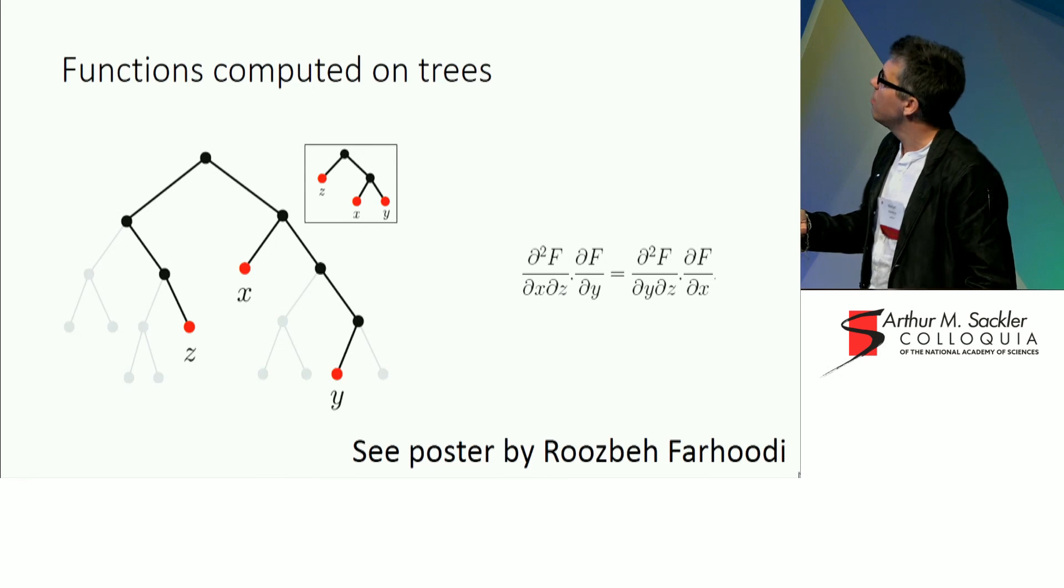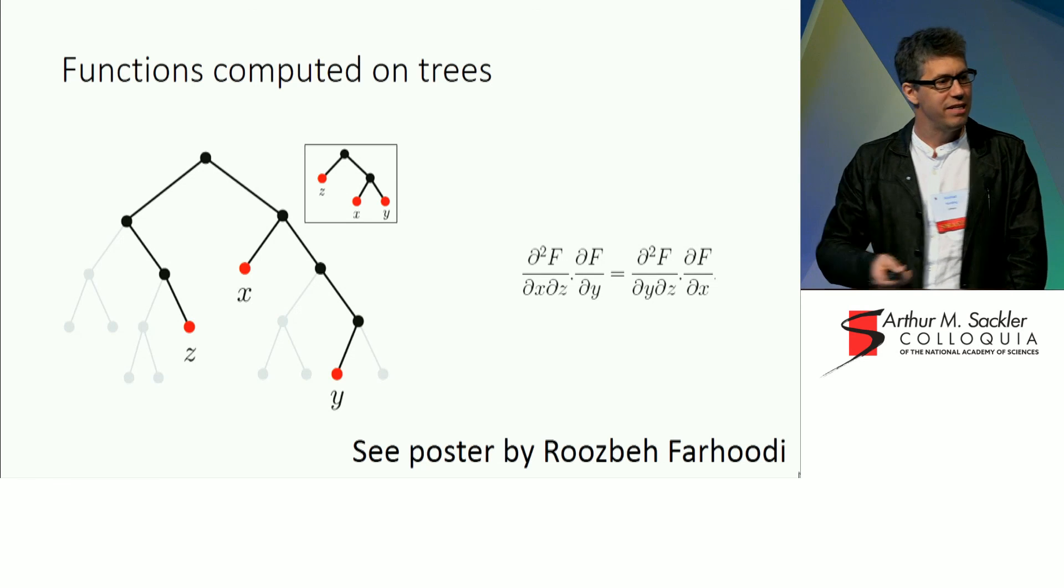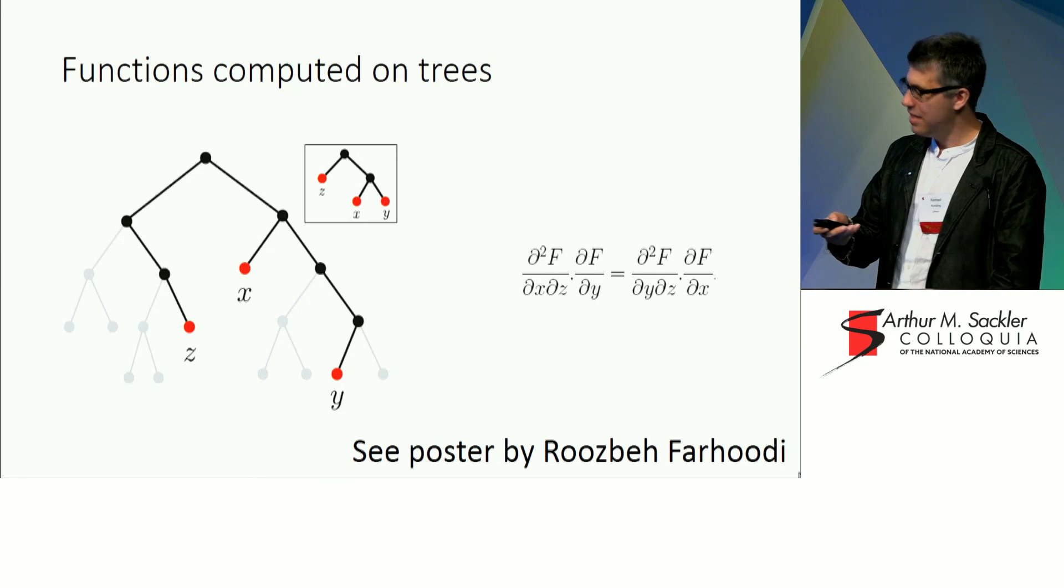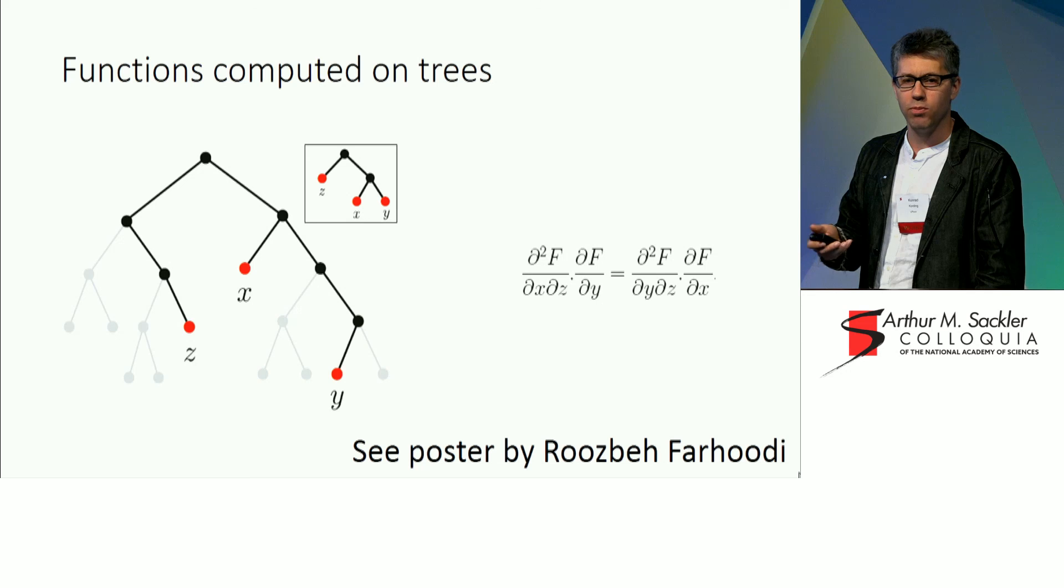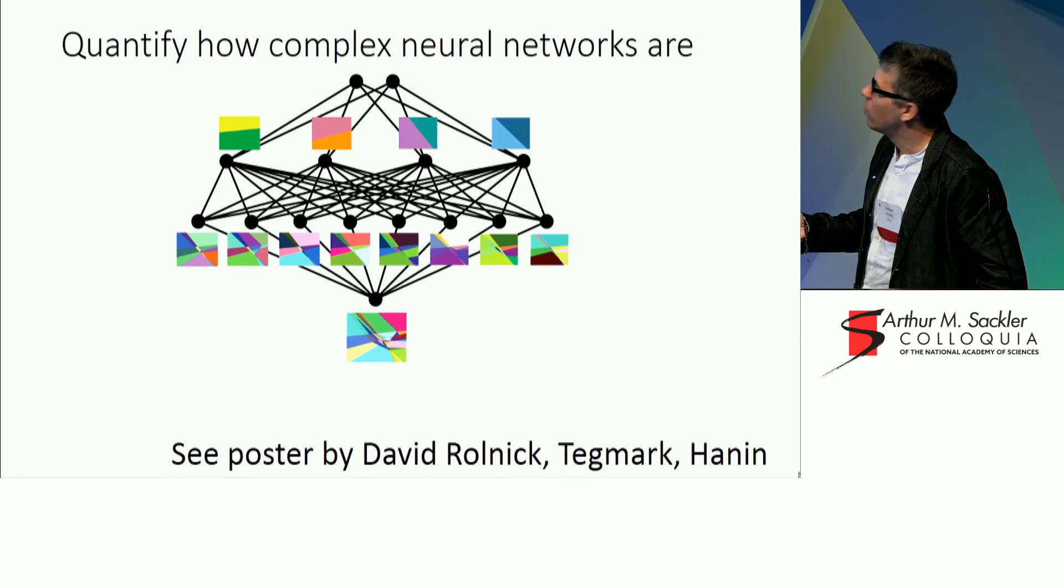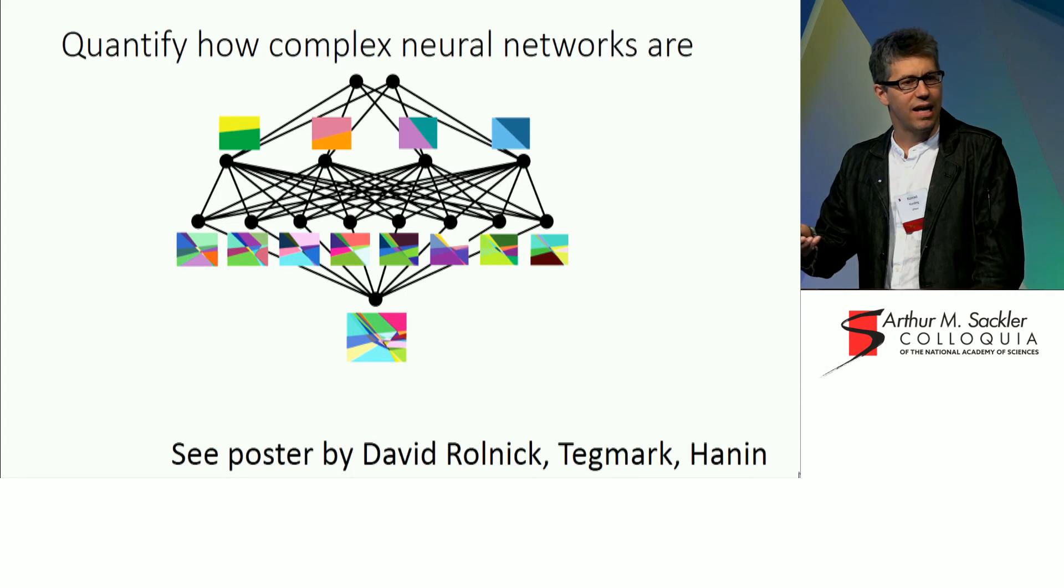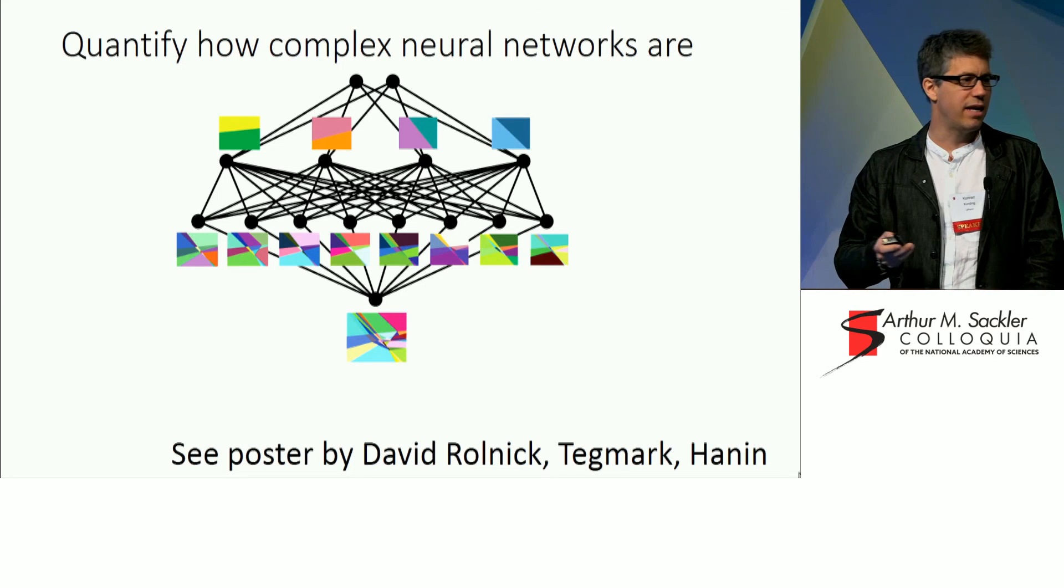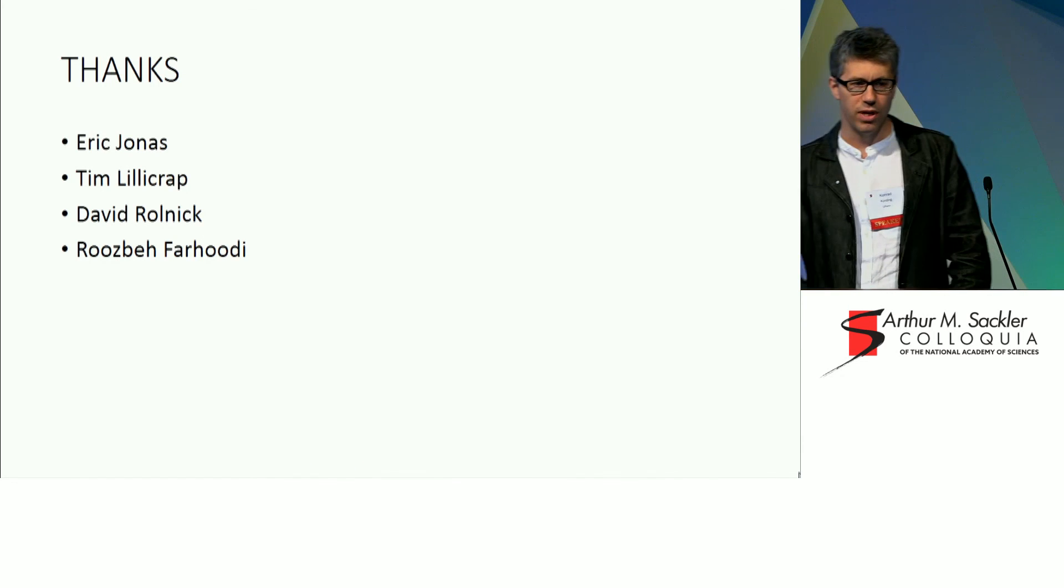Okay, and I just want to, this is the end of my talk, I just want to plug two posters, because I didn't tell you about our research on why deep learning works. But, there's a great poster by Ruth B. Farhoudi, who asks which functions can be computed on trees. And, I should also mention David Rolnick's poster, which asks about the class of functions that neural networks can implement. Basically, counting how many linear regions there are. And, with that, I want to thank everyone for your attention.